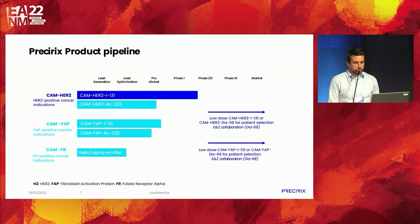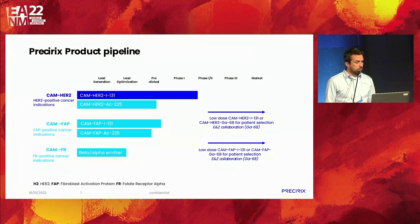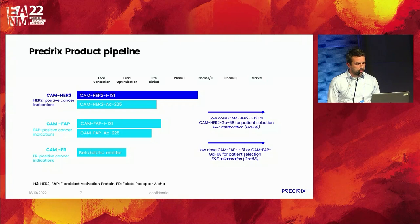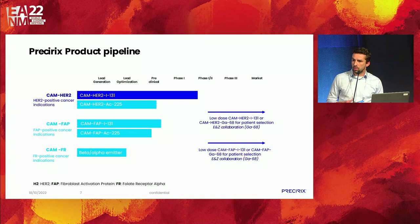This is the Precyrix product pipeline. Our lead compound is a HER2 targeting compound labelled with I-131, currently in clinical evaluation. We are also developing a second-generation compound labelled with actinium-225. Our second asset is a FAP targeting single domain antibody in late preclinical R&D, with the iodinated compound aimed for clinical translation next year. We also have a folate targeting single domain antibody at the discovery level, and we consider imaging relevant for patient selection.